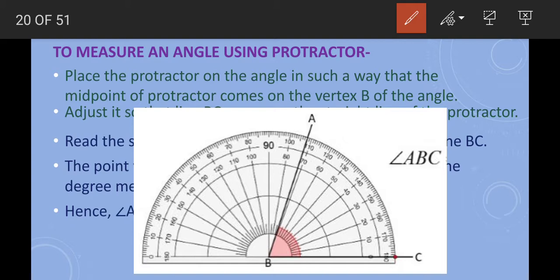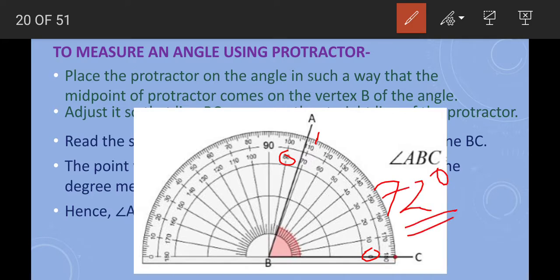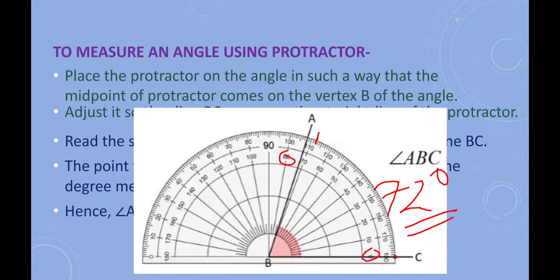To summarize the example: draw the angle, place the protractor so the vertex and center coincide, and align the baseline with line BC so zero degrees falls on BC. Check where line AB falls — it is after 70 degrees but less than 80 degrees, coinciding with the second mark after 70 degrees. So the angle measures 72 degrees. That is how to measure any angle using a protractor. Thank you.